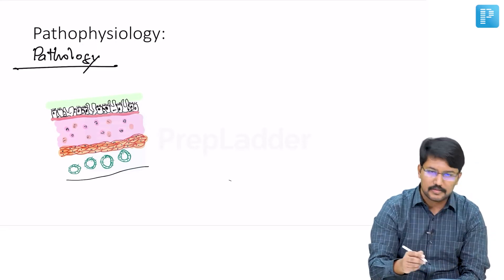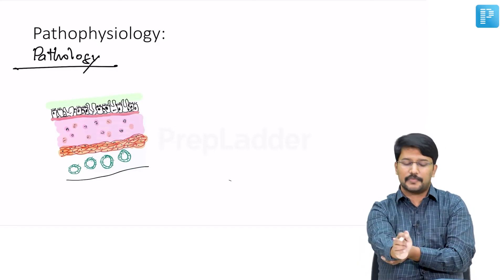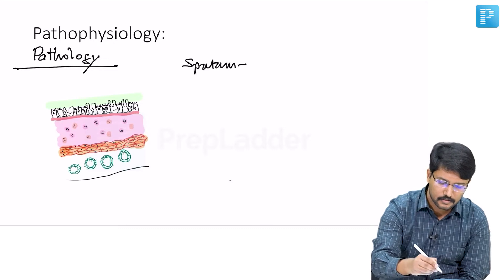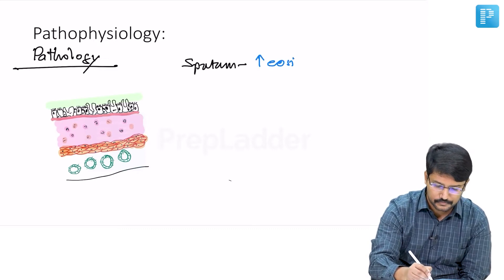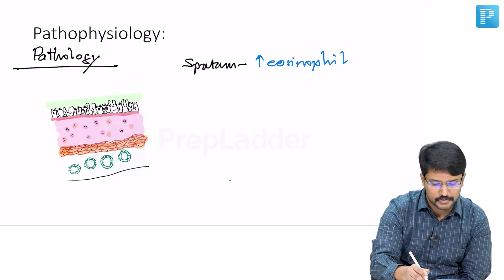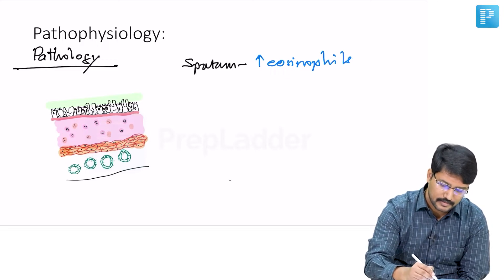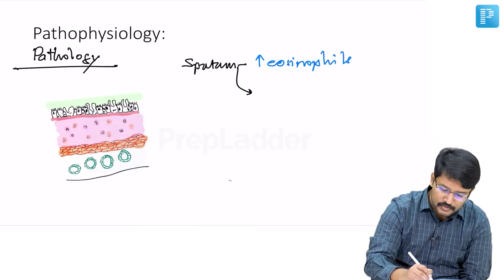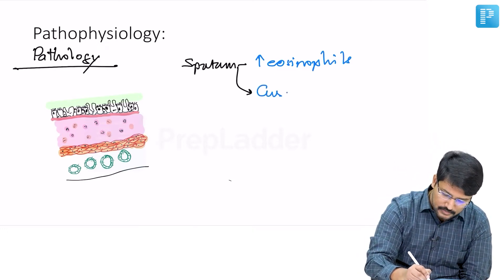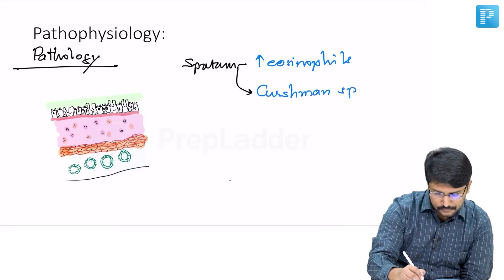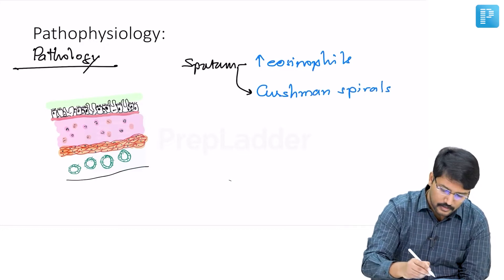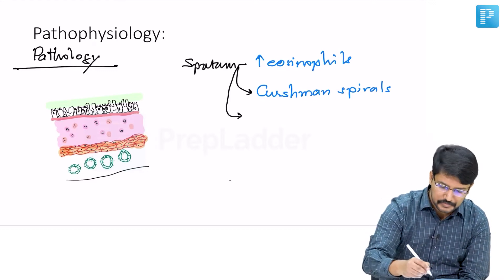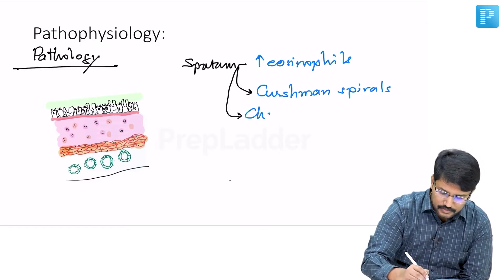If you study the sputum of patients with asthma, you will notice increased eosinophils, what we call eosinophilia. Second, you may get basophilic mucous plugs called Kerstriman spirals, and third, characteristic of asthma, something called Charcot-Leyden crystals.